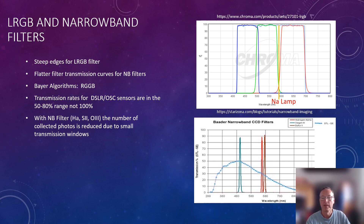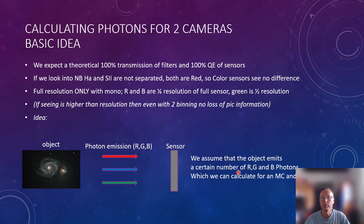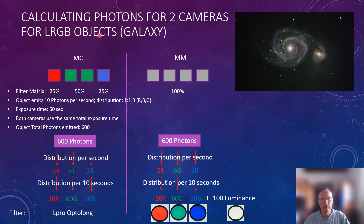When we calculate photons for our two cameras, the basic idea is: we have an object that emits photons — red, blue, and green — and they hit the sensor. Assuming the object emits a certain number of RGB photons, we can calculate the photons that have the probability of giving a signal on our sensor. Let's go into that for our first example: a galaxy.